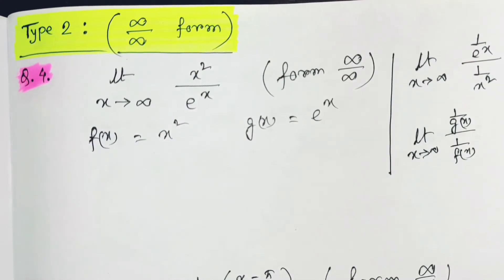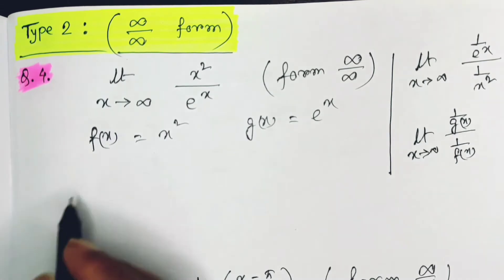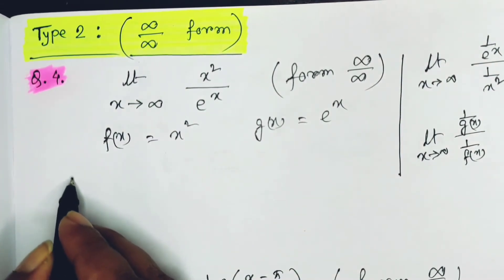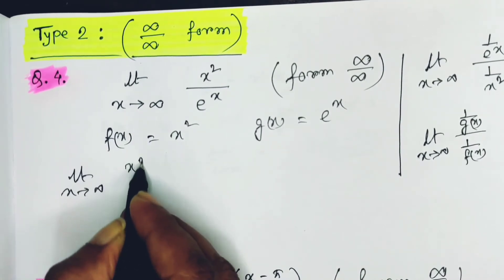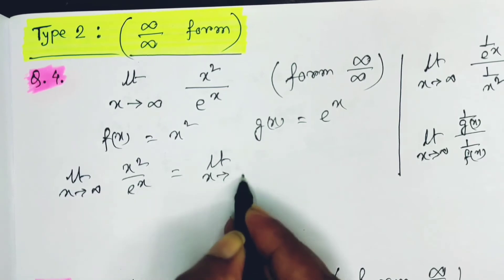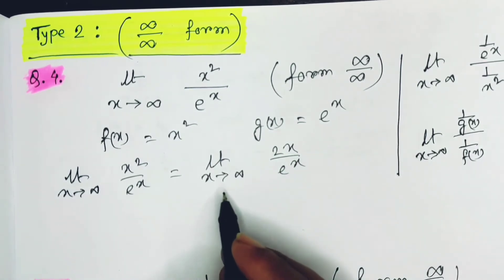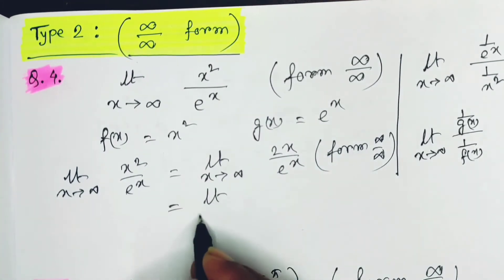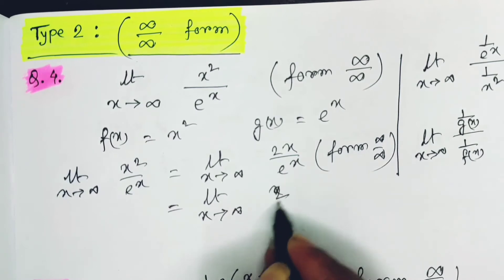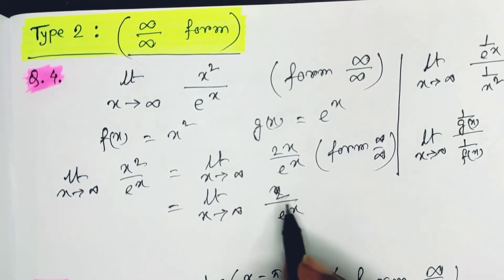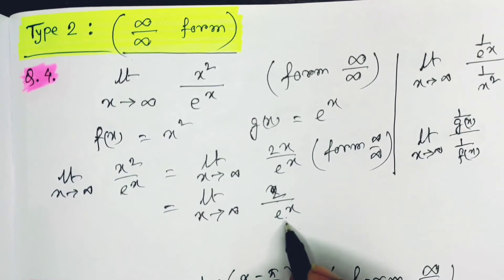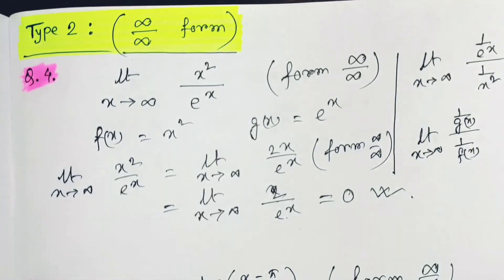For the infinity by infinity form, the same process applies — no conversion needed. Example: limit x → ∞ of x²/e^x. Taking derivatives: 2x/e^x, still ∞/∞. Differentiate again: 2/e^x. Now substituting x → ∞: e^∞ is infinity, so we get 2/∞ = 0. The limiting value is 0.